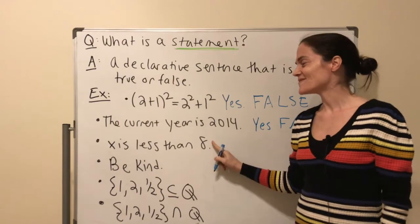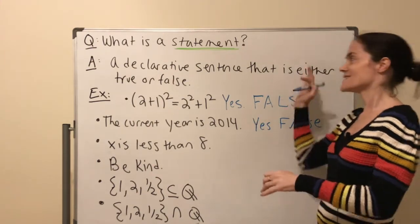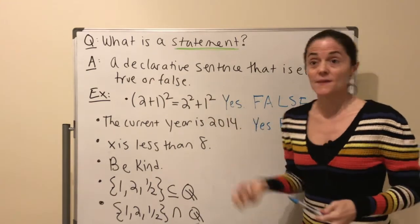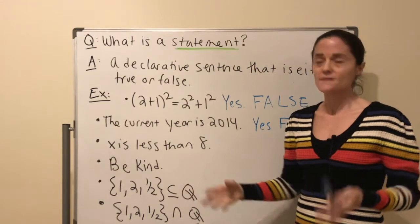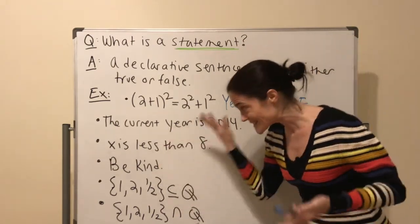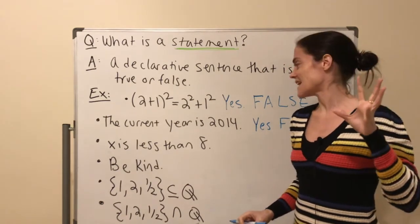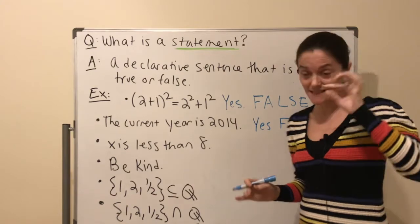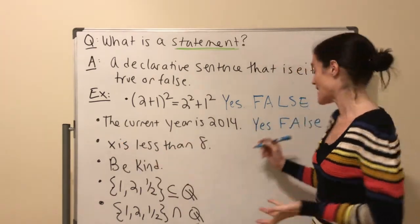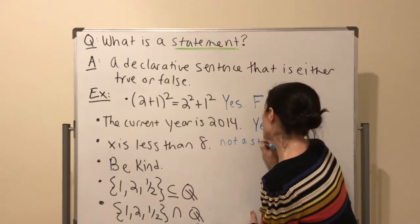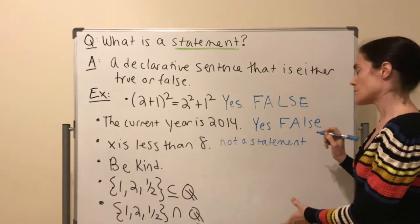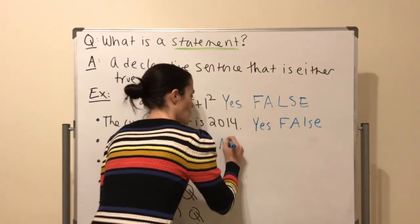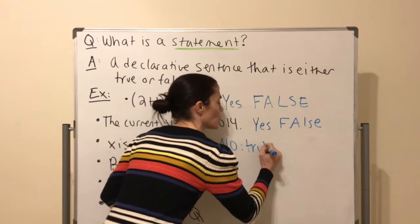'x is less than 8' — is this a statement? The problem is that it's not unambiguously true or false; it depends on what x is. If x is 5, then '5 is less than 8' is a true statement; if x is 27, '27 is less than 8' is false. But with a variable, the truth is ambiguous, so this is not a statement.